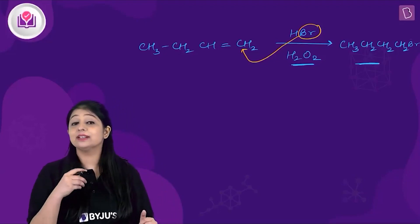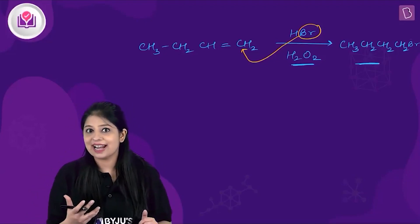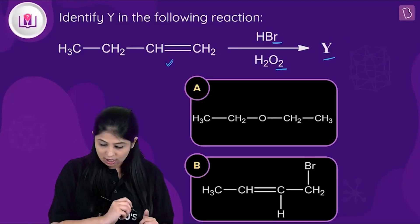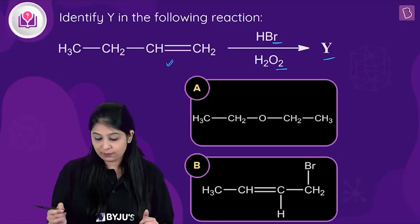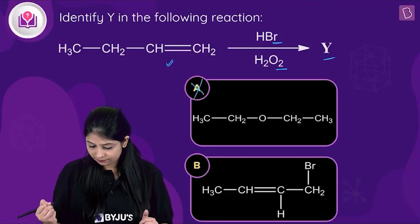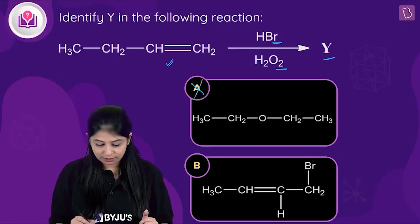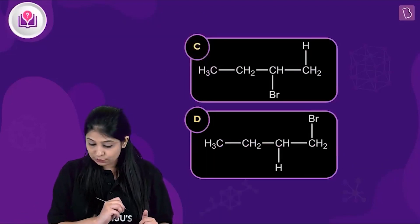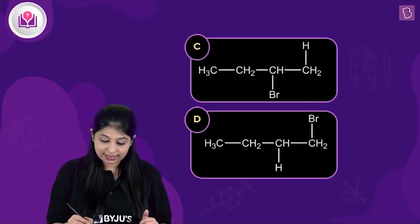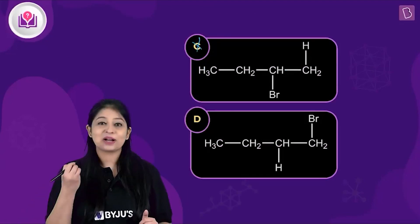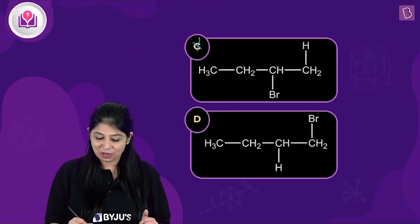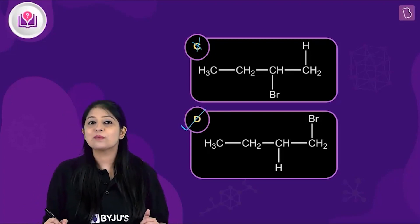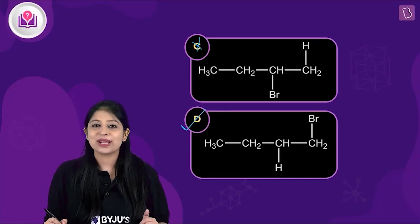Since HBr is being added, the negative part of the addendum is Br. Options A, B, and C are not correct. The correct option is D, which is 1-bromobutane.